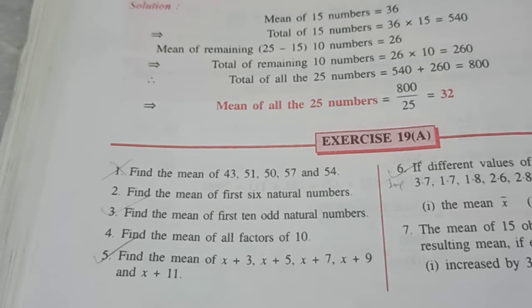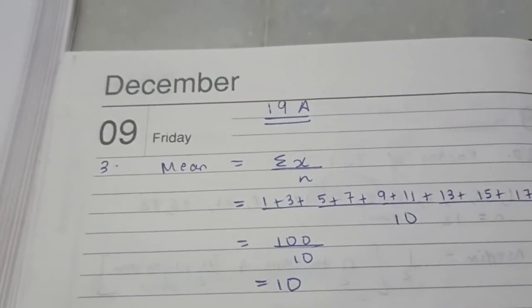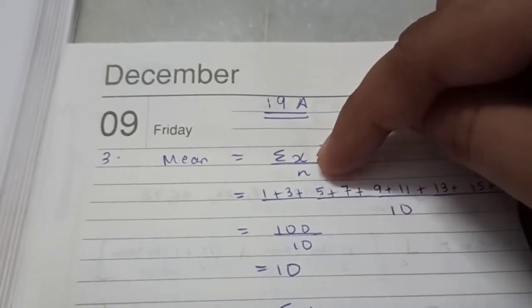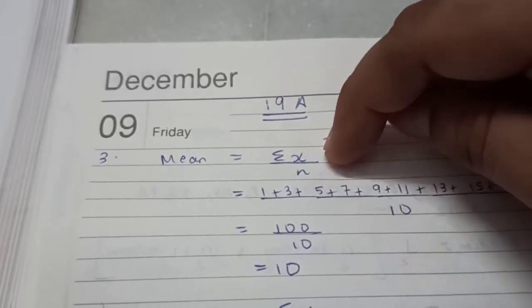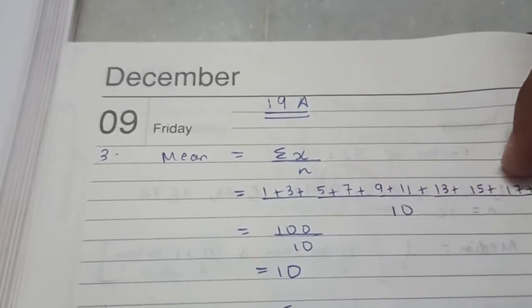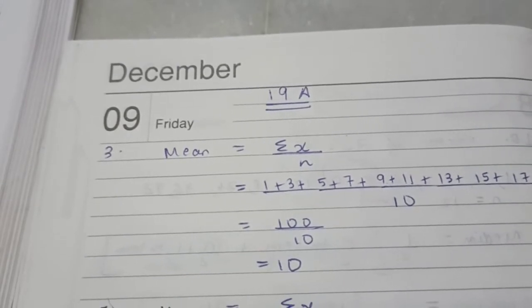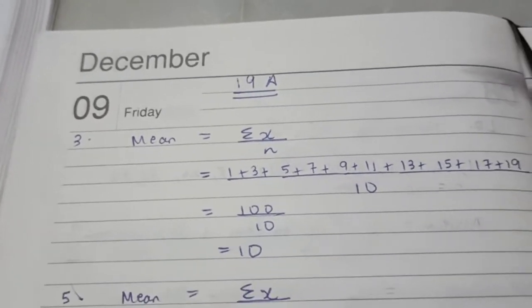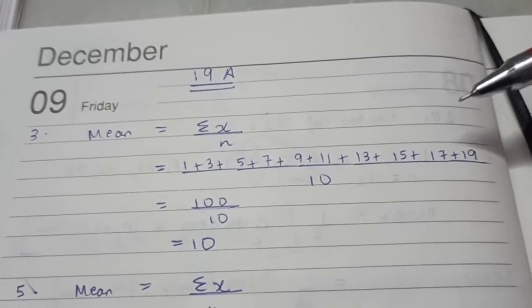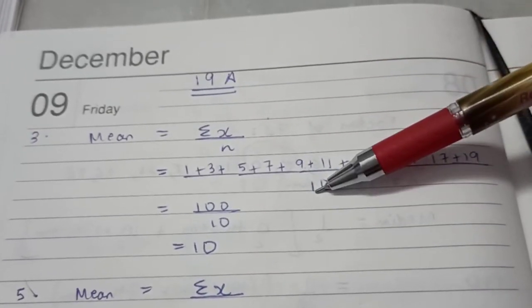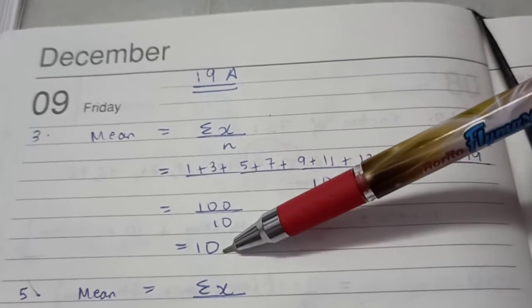Let's do the third sum. Find the mean of the first 10 odd natural numbers. The formula of mean is the total of all the observations or all the numbers or all the quantities. The sigma sign means summation, so summation of all x where each of this is a value of x, upon n, that is total number of observations. In this sum, the data are 1, 3, 5, 7, so on till 19, the first 10 odd natural numbers, upon 10 because we have totally 10 observations. Interestingly, the average comes up to be exactly 10.